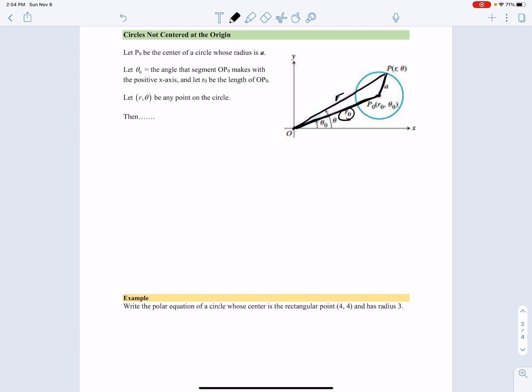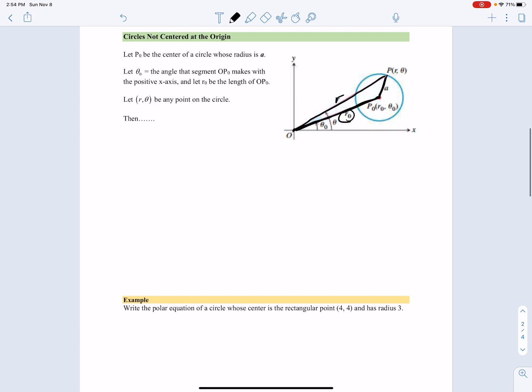The interesting thing here is that we can use law of cosines for this. If we say that theta zero, which is written right here, and r and any value of theta that corresponds to the point on the circle is there in orange, that means this angle right here is theta minus theta zero.